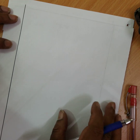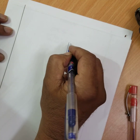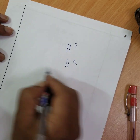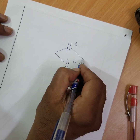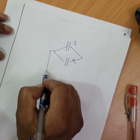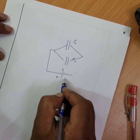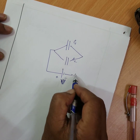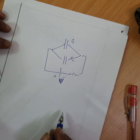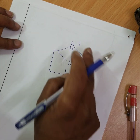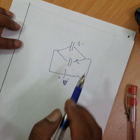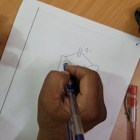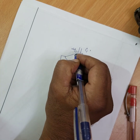Consider two capacitors C1 and C2 connected in parallel. They are connected to a battery with positive and negative terminals, and the voltage V is applied to this circuit. We need to obtain an expression for the effective capacitance of two capacitors connected in parallel.